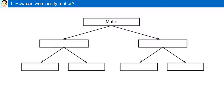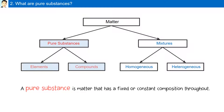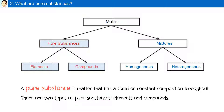How can we classify matter? Matter can be classified into pure substances and mixtures. Pure substances are composed of elements and compounds, while mixtures are made up of homogeneous and heterogeneous mixtures. A pure substance is matter that has a fixed or constant composition throughout. There are two types of pure substances.